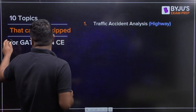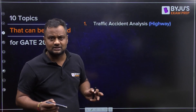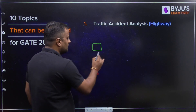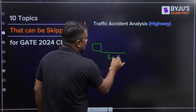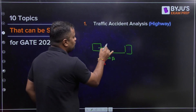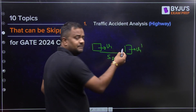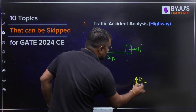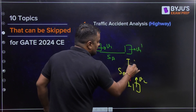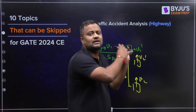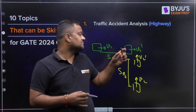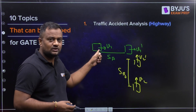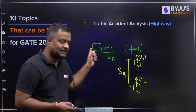The first topic is from highway engineering: traffic accident analysis. Suppose a vehicle applies a brake because an accident is about to happen — there are skid marks of distance SA and it reaches with velocity V1. Another vehicle in the same or another path has velocity V2, applies a brake, skid marks SB, and reaches velocity V2 dash. After the collision, given the velocities and skid marks, we find the initial velocity to determine if it exceeded the design speed.